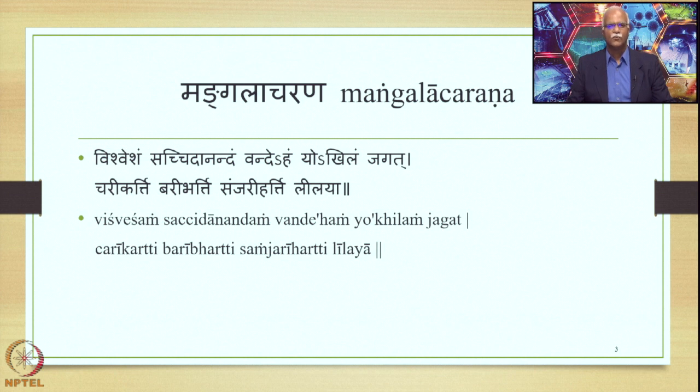In this course, we are focused on the Tatpurusha Samasa. Tatpurusha is a prominent type of Samasa in Sanskrit along with Avyei Bhava, Bahuvrihi, and Dvandva. These Samasas are stated in the Ashtadhyayi in the following order: Avyei Bhava, Tatpurusha, Bahuvrihi, and Dvandva. Tatpurusha Samasa is by far the most productive of the Samasas, whether in Samasa Vidhayaka Sutras, Samasanta Pratyaya Vidhayaka Sutras, or Samasa Swaravidhayaka Sutras.